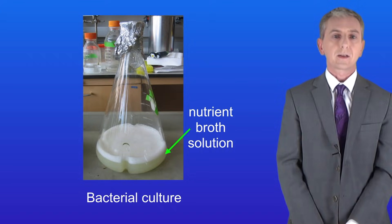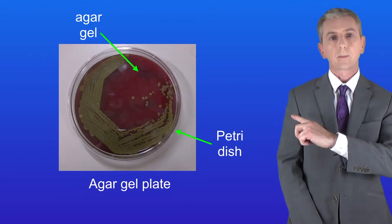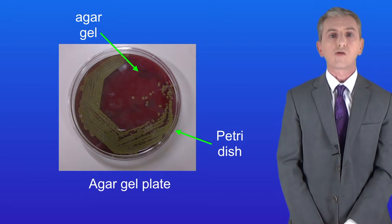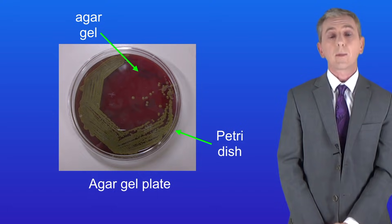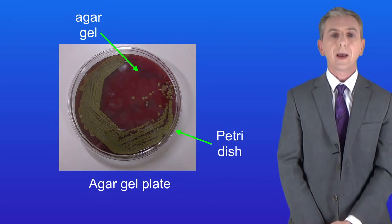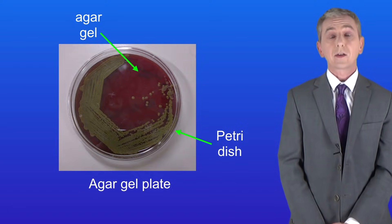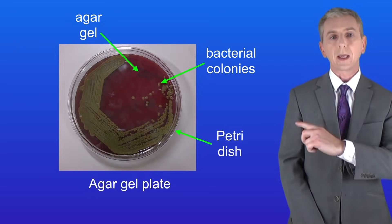Another way to culture bacteria is to use an agar gel plate, which I'm showing you here. Agar gel plates contain nutrient broth that has been set into a jelly using a chemical called agar. This is then poured into a petri dish and allowed to set. On an agar gel plate the bacteria grow into visible colonies, and you can see them here.